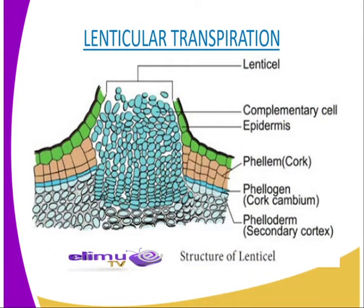We also have our third type of transpiration, which is called lenticular transpiration. As you can see from the diagram, we have the secondary cortex, the cork cambium, the cork itself, the epidermis, and the complementary cells, whereby these give rise to the lenticel cells. In simple terms, lenticular transpiration is the loss of water vapour through the lenticel cells. These lenticel cells are loosely packed cells found on woody plants.